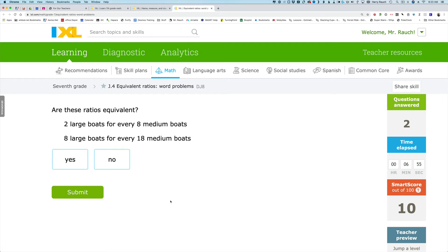Here's our next example. Are these ratios equivalent? Two large boats for every eight medium boats or eight large boats for every 18 medium boats? Let's check it out. So let's use the words large and medium to guide us as we try to set up our proportion.